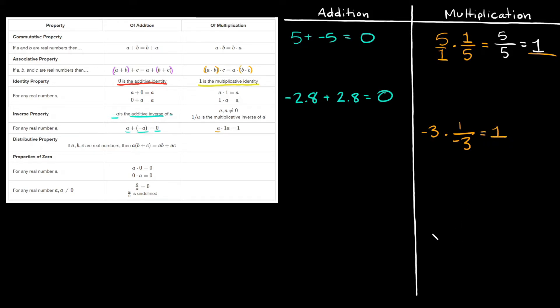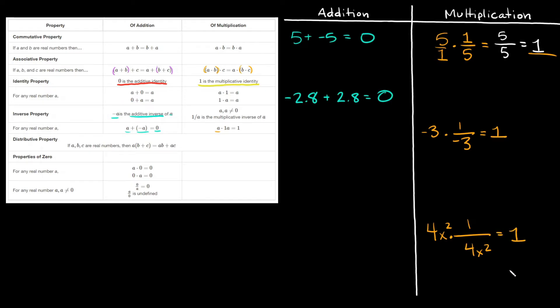It works the same way with variables. So if I had 4x squared, the reciprocal would be 1 over 4x squared, and if you multiply these together, your answer would again be 1.